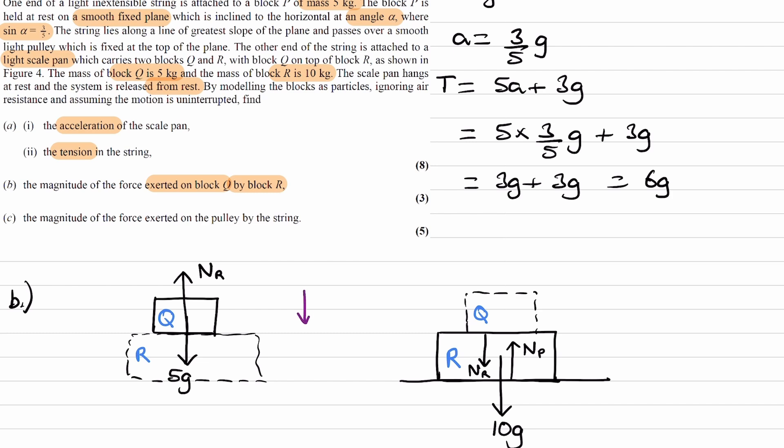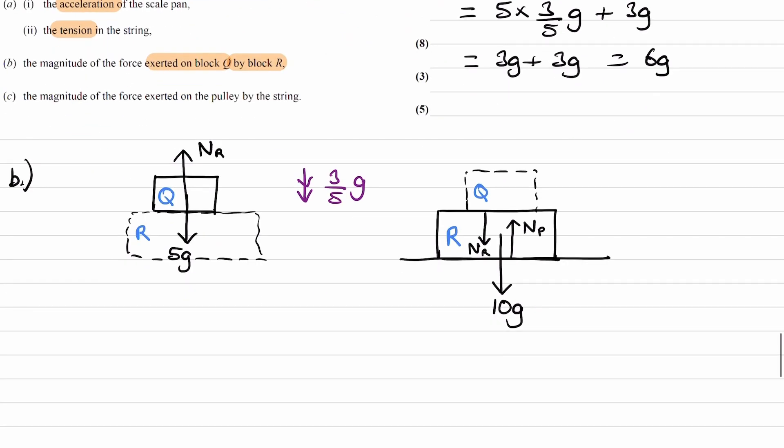Let's consider block Q. We know the acceleration is downwards. The acceleration, as we worked out earlier, was three-fifths of G. So, if it's accelerating downwards, that means that the 5G is bigger than the NR and it means that the resultant force will be 5G minus NR. So, total downward force minus total upward force. That would be the overall force downwards. This must be equal to MA. Mass is 5. Acceleration is three-fifths of G.